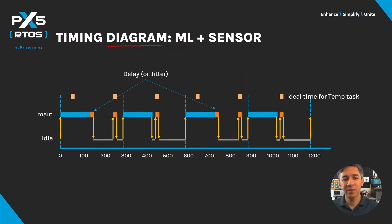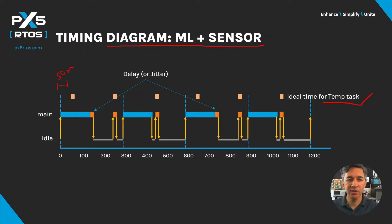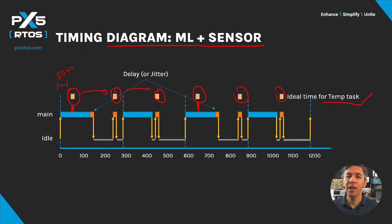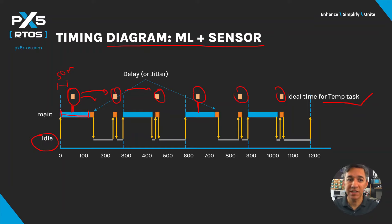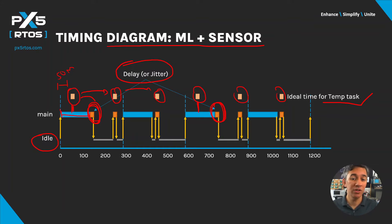As you can see in this timing diagram, some events will happen at the same time. We have a line showing the ideal time for the temperature task — after the initial 50 milliseconds of wait, it should read at regular 200 millisecond intervals. But there is an overlap with the machine learning task at certain points. Because we have no preemption, the machine learning task runs first and the temperature task must wait until it completes, causing a delay or jitter. If the real-time requirement does not allow for this amount of jitter, the system will fail.